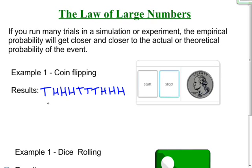So if I look at this, the empirical probability of flipping heads is six out of ten, or 60%. Now we know that the theoretical probability of flipping heads is 0.5, one half, one out of two.